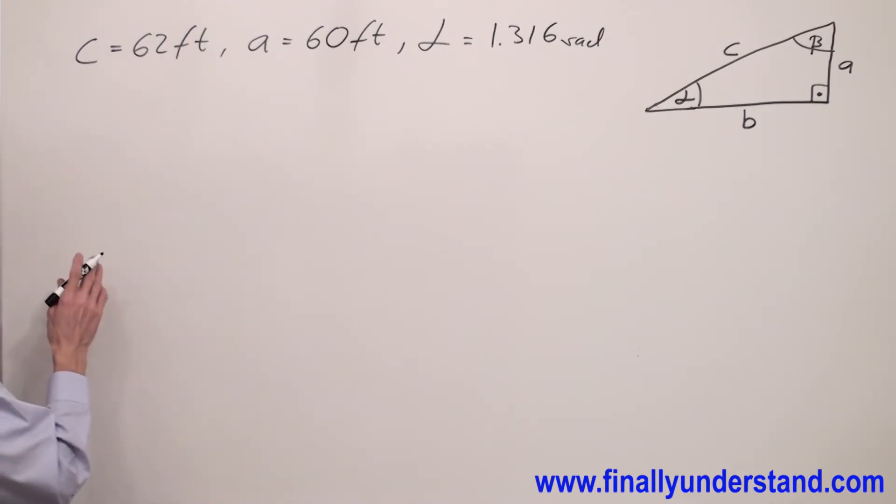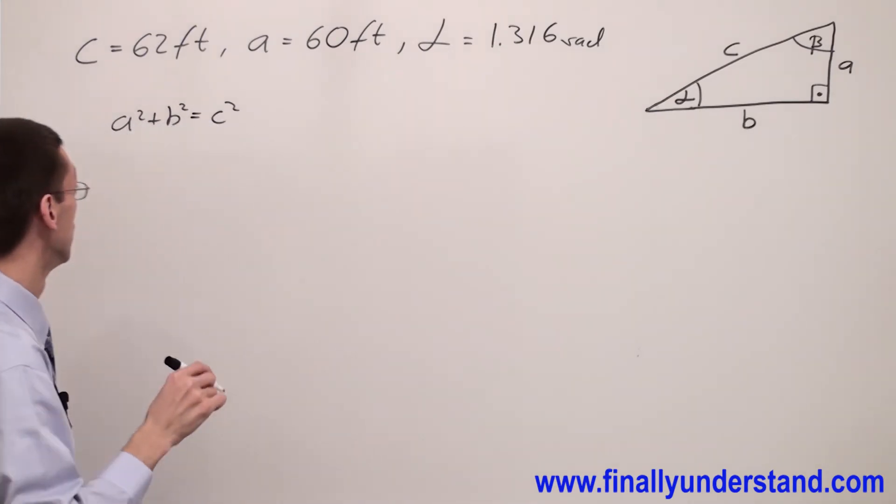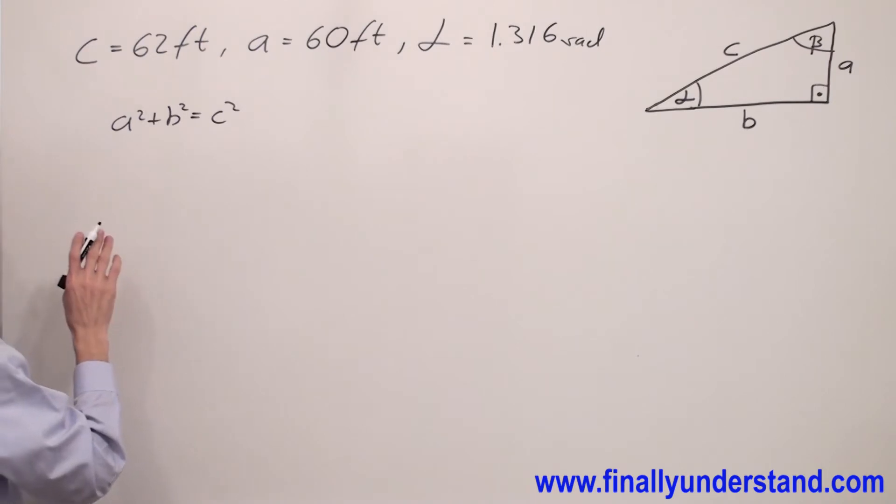Again, we're going to start solving this problem from the Pythagorean theorem. A squared plus B squared equals C squared. Always write the formulas first. Doesn't matter if you remember them or don't remember them. Always write them down.